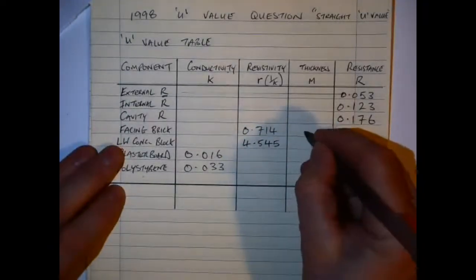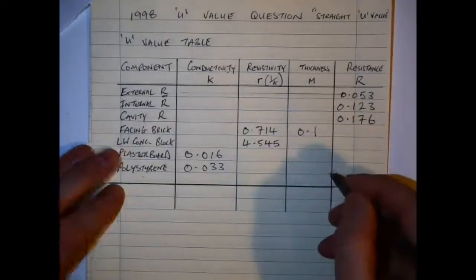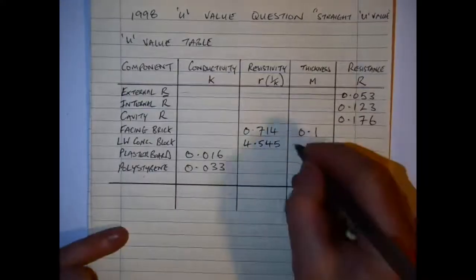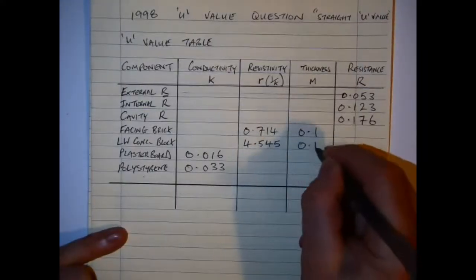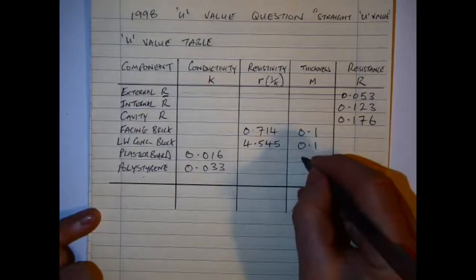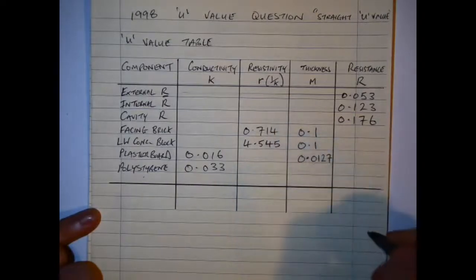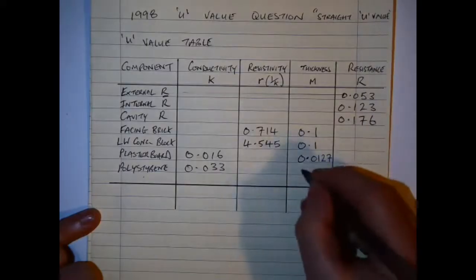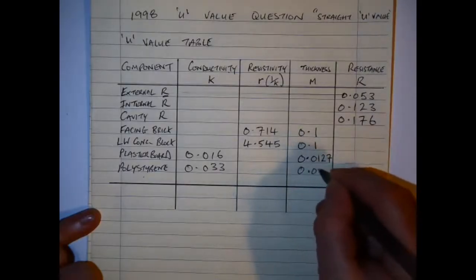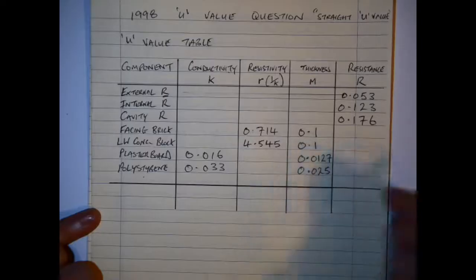You can see it's 100 millimeters of facing brick, so that's 0.1. It's also 0.1 for the lightweight concrete block, and then the plasterboard is 0.0127, so that's the thickness and 12.7 millimeters actually. And the polystyrene then is 25 millimeters.